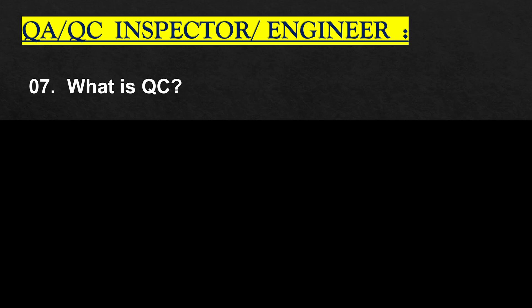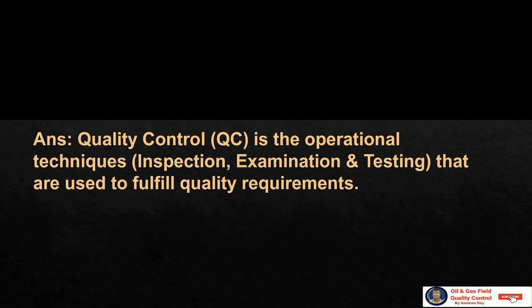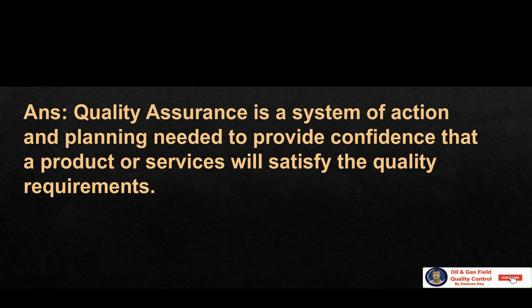First question: what is QC? QC — the full term is quality control — is an operational technique for inspection, examination and testing that are used to fulfill requirements for quality. Whereas quality assurance is the system of action and planning needed to provide confidence that a product or service will satisfy the quality requirement.